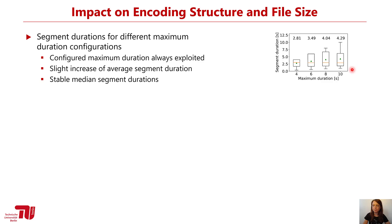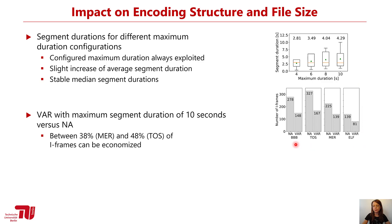Next, let's look at how many I-frames we can save if we allow segments ranging from 0 to 10 seconds. We see the four different videos, where the left bar denotes I-frames needed with the fixed approach and the right bar shows I-frames needed with the variable approach. We can already see that we can drastically reduce the number of I-frames.